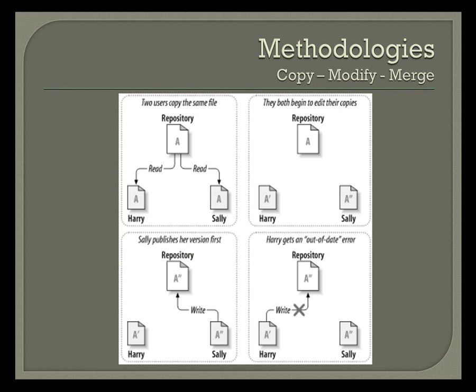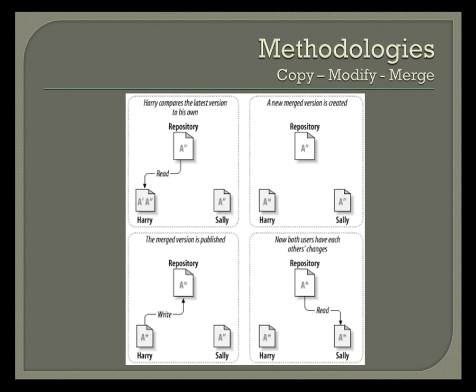The next methodology — and the way subversion does it by default — is called copy-modify-merge. Harry and Sally both check out the file they want to modify and start making their changes. Sally finishes first and commits her code to the repository. When Harry tries to commit, he gets a file conflict because his version is older than the current repository version. He has to re-check out the file, manually merge his changes with Sally's, and then commits what is now a merged version to the repository.